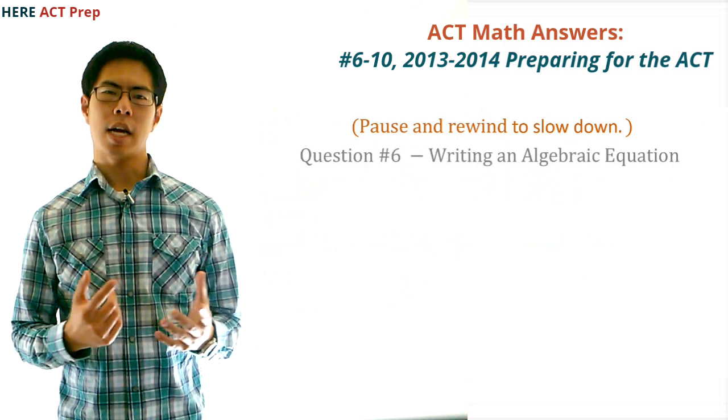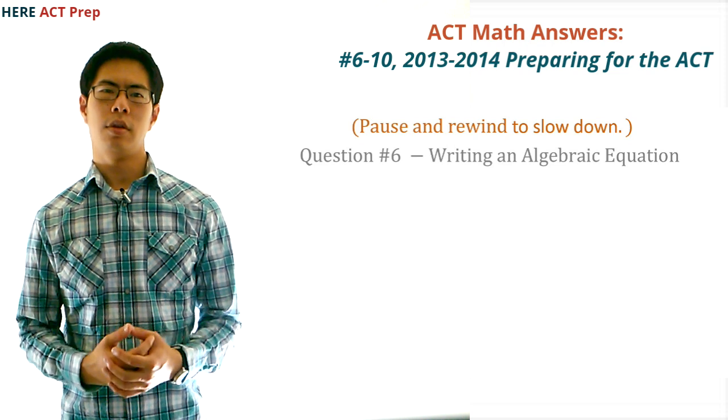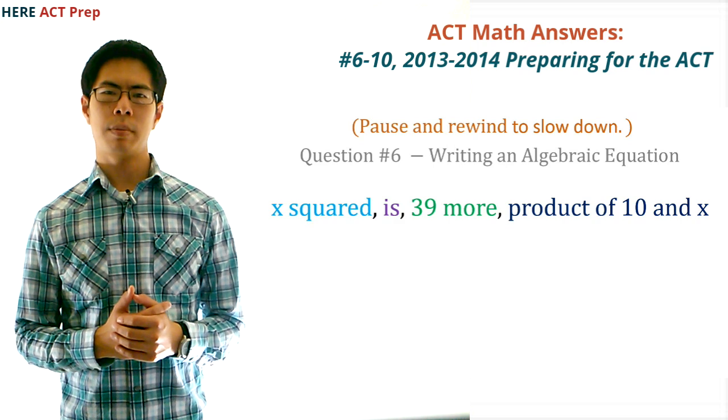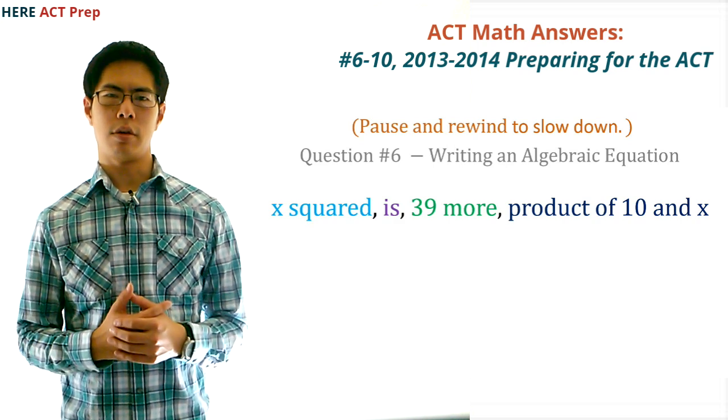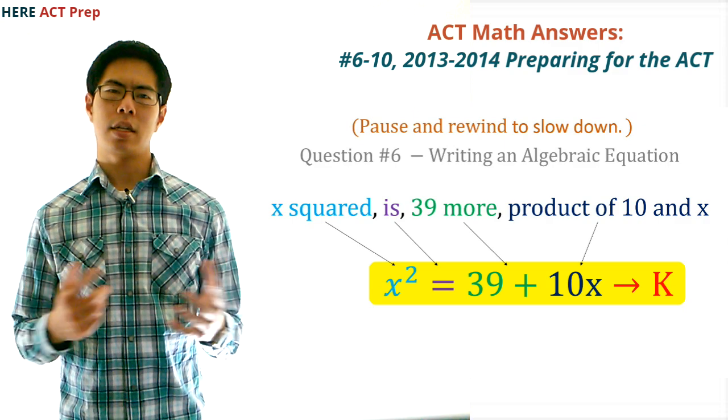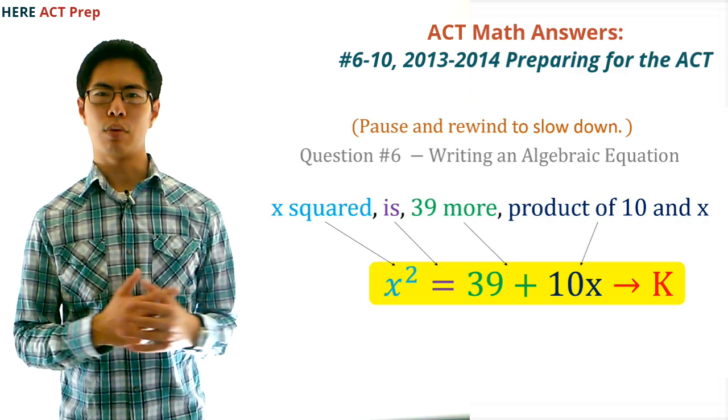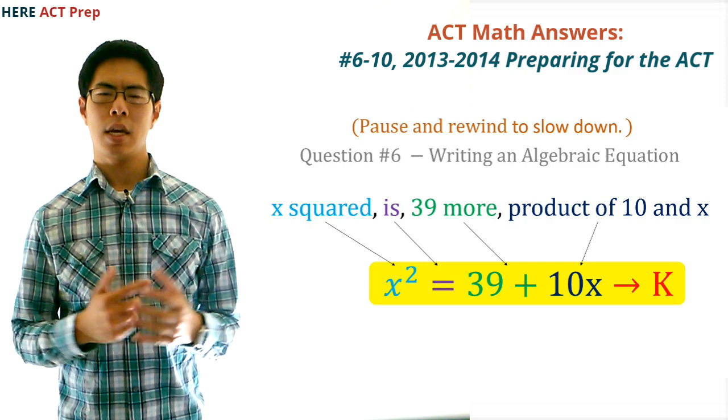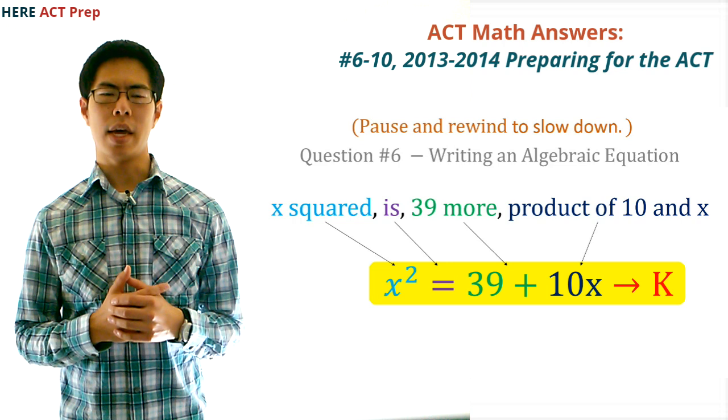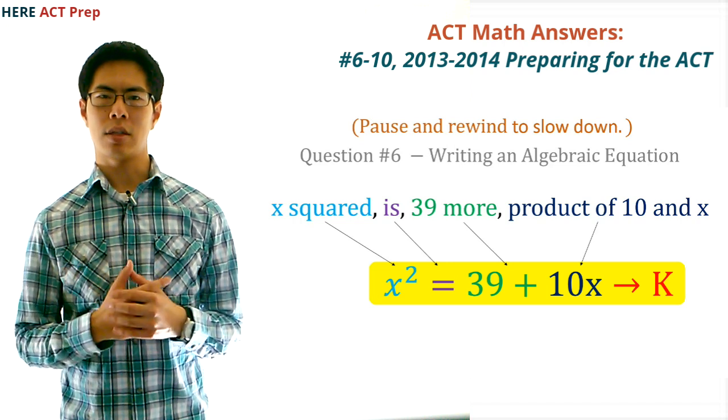Question 6. The concept this question tests is writing an algebraic equation. To do this question, we should recognize that the word 'is' means equals. So we have a number x squared equals 39 more than the product of 10 and x. Next, let's replace the words with math. x squared will be to the left of the equal sign, 39 more is the same as 39 plus, and the product of 10 and x is the same as 10x. So our final equation will be x squared equals 39 plus 10x. So the answer is K.